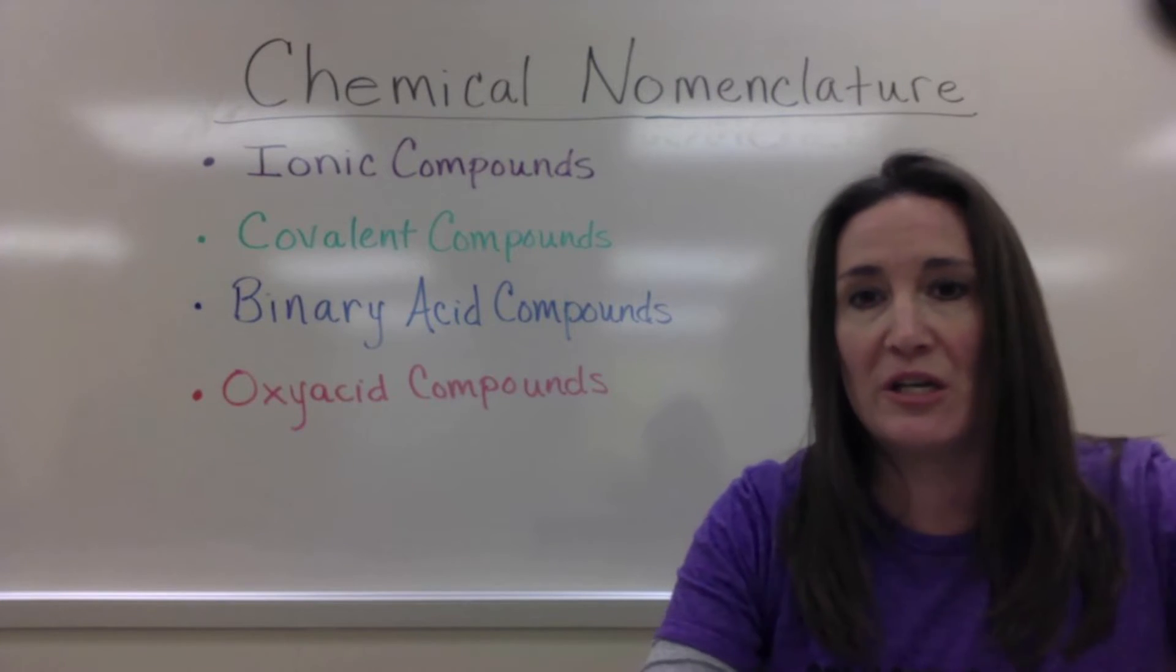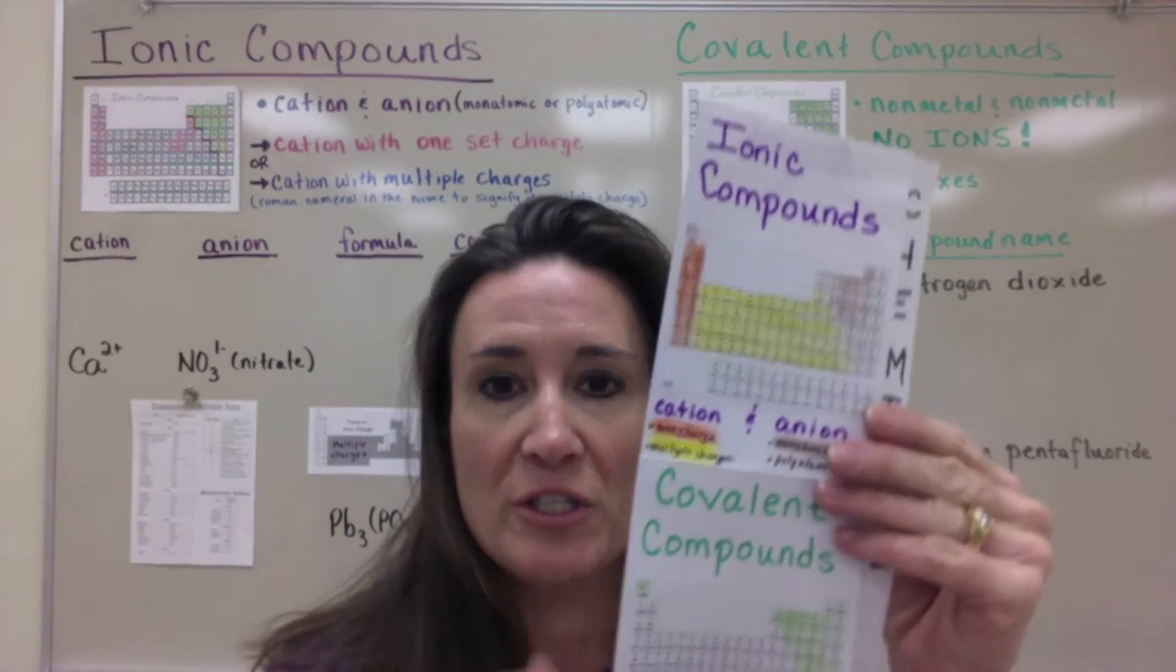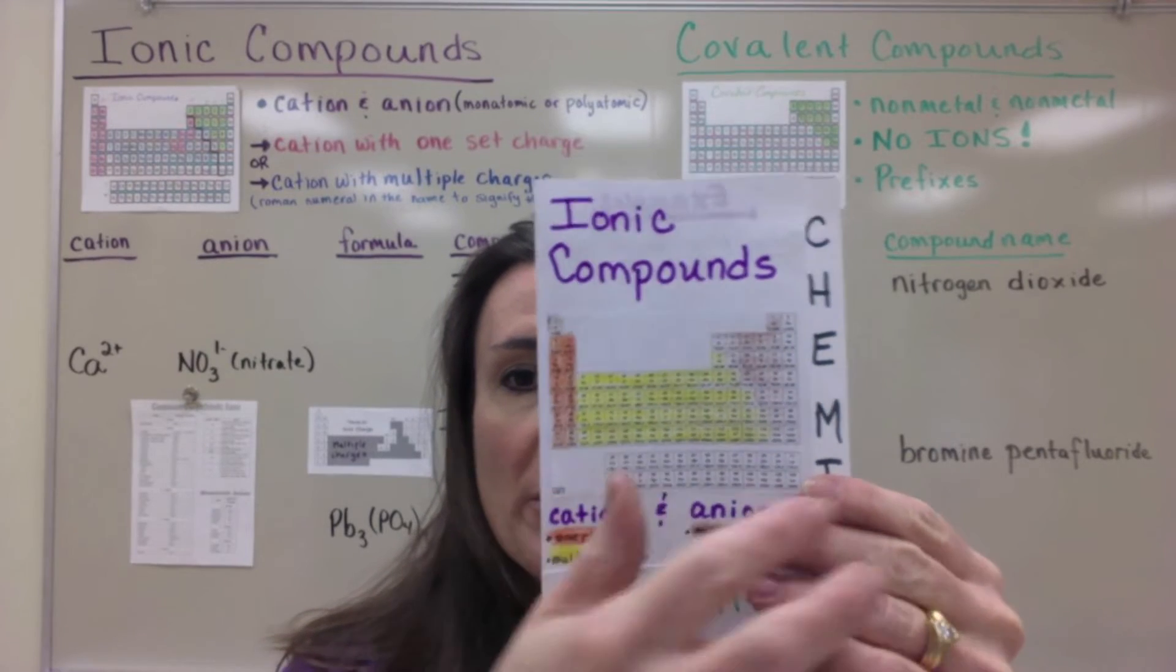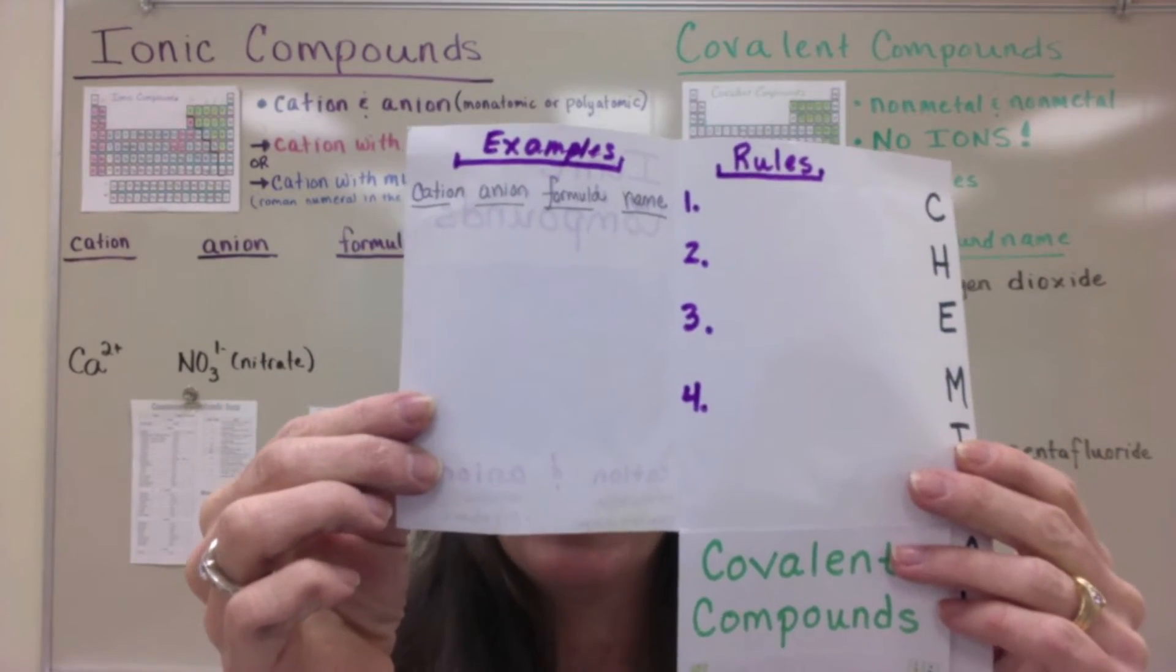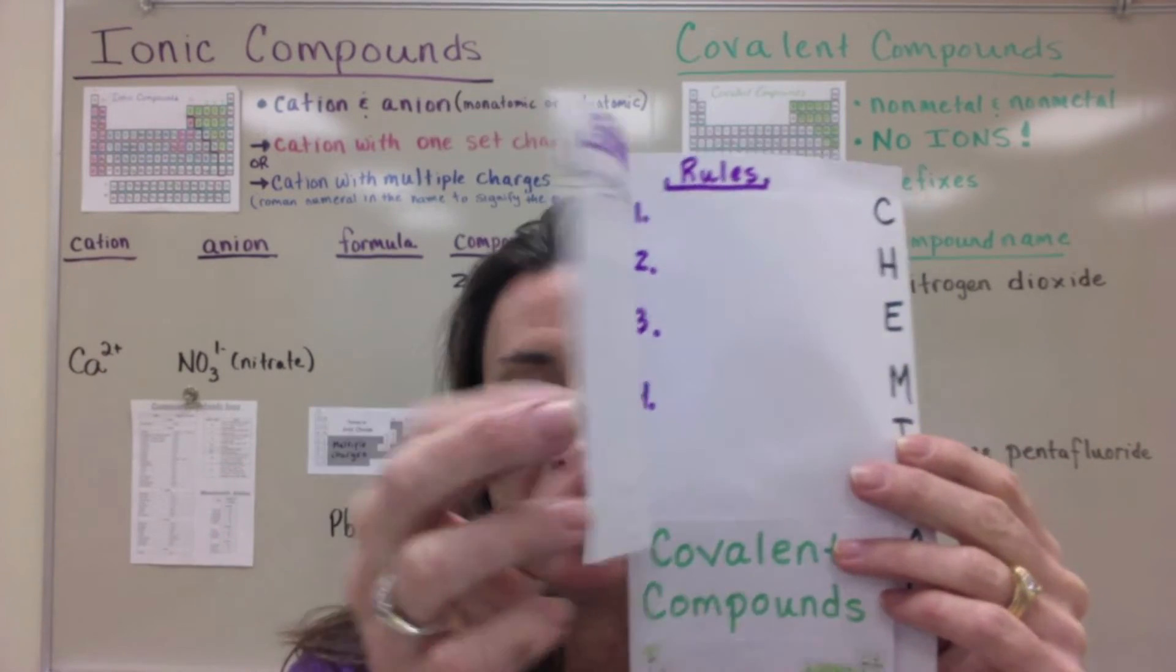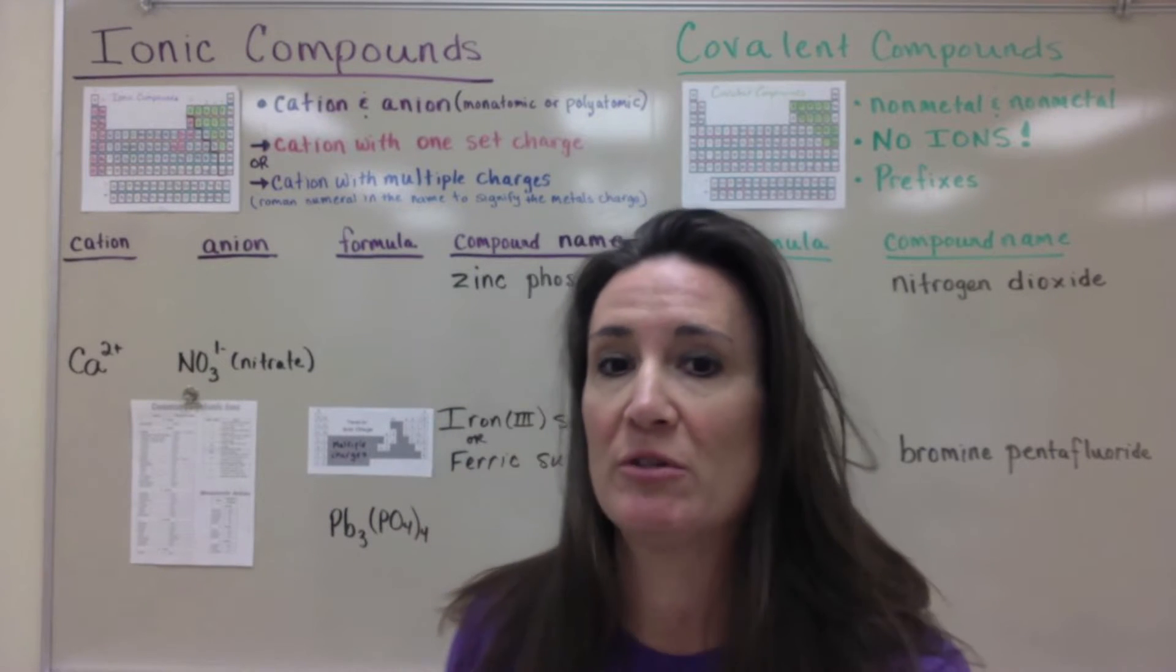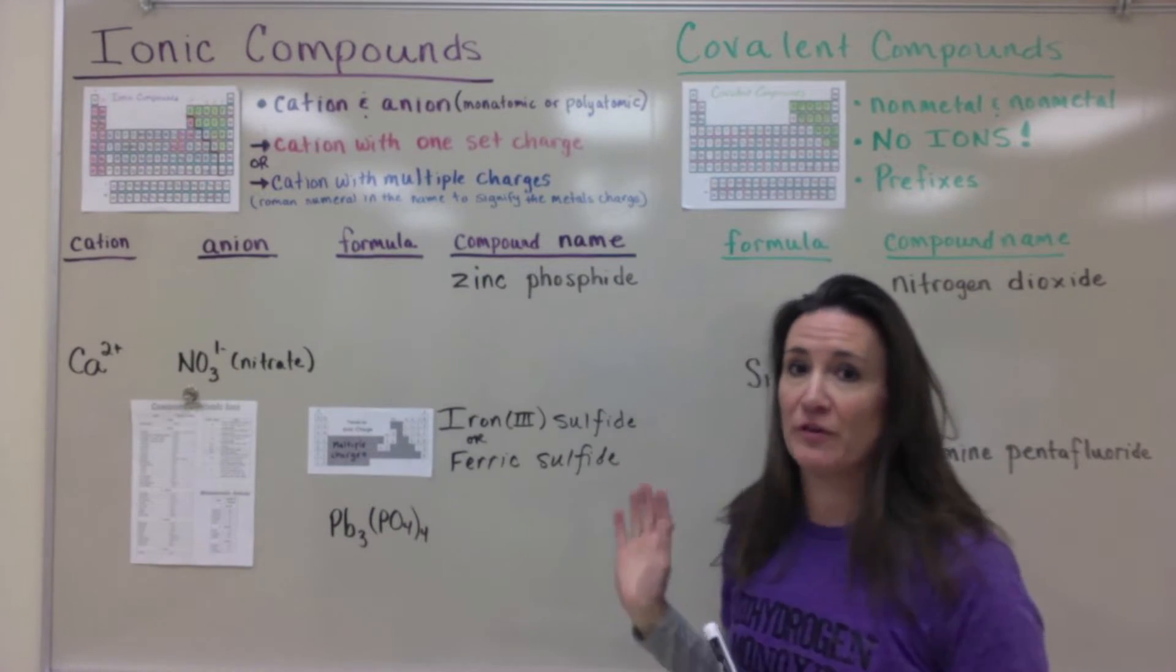So those are the things that you're going to need before we even fill in any examples to this type of process called chemical nomenclature. So with this foldable what you're going to have is how to recognize the compound on the front with a periodic table included. And then on the inside you're going to have the rules and the examples for each of those compounds. You can find more examples and the rules on my website at schmidtchemistry.weebly.com. I'm going to go through four examples quickly for each.